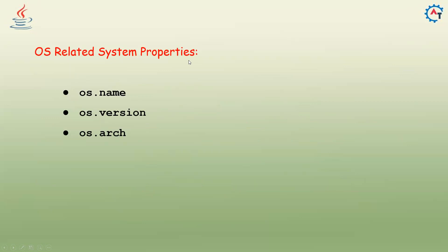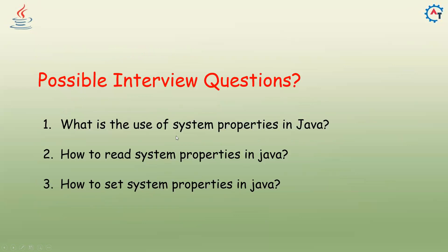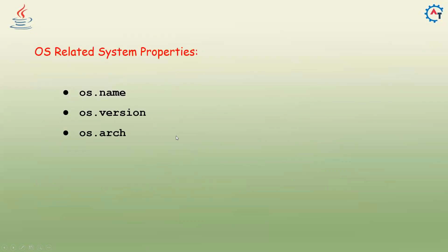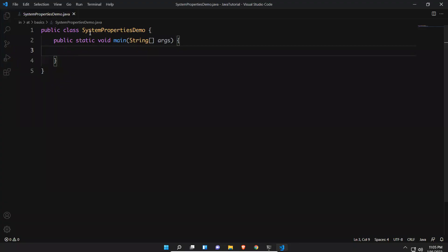There are also OS related system properties if you want to know what OS you are working on — such as os.name, os.version, os.arch. We will see some of them with the help of code. I have created one class called SystemPropertiesDemo.